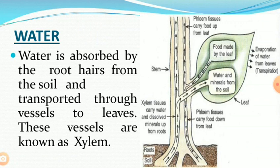Water is absorbed by the root hairs from the soil and is transported through special vessels to the leaves. These vessels are known as xylem. The food made by the leaves is transported to all parts of the plant through special vessels known as phloem, as shown in the figure. Water always moves in the upward direction.